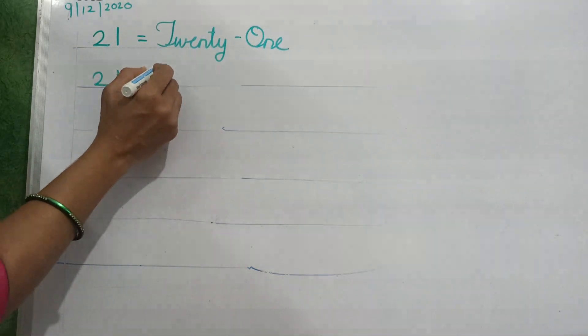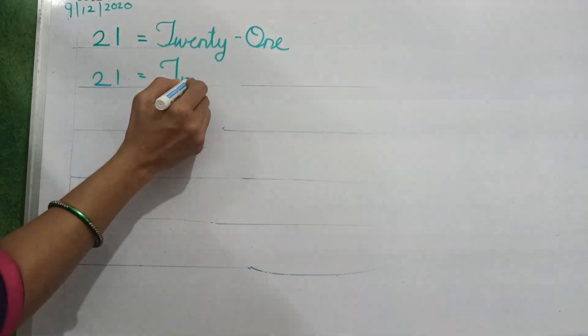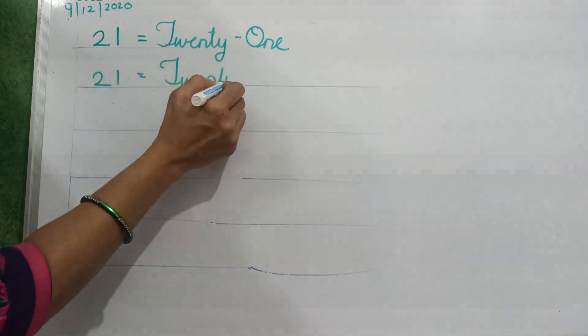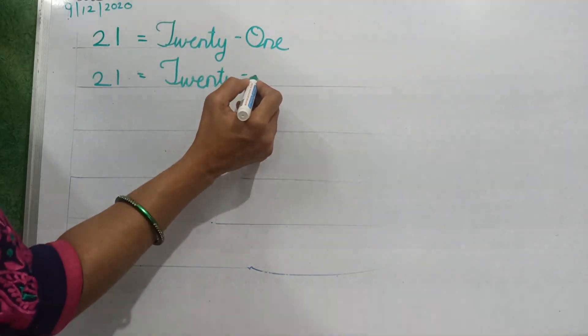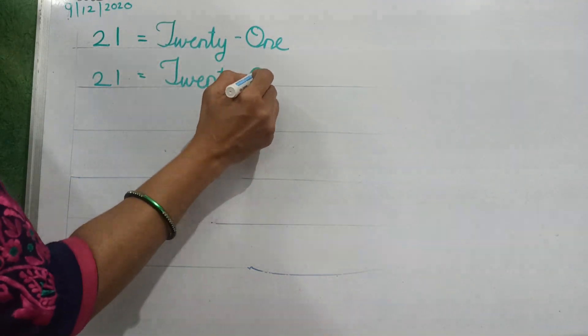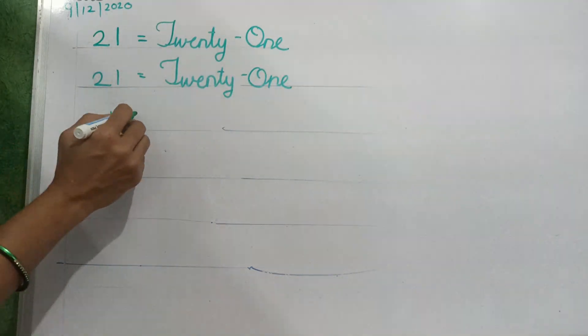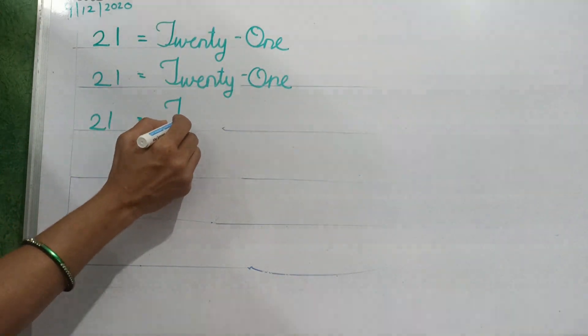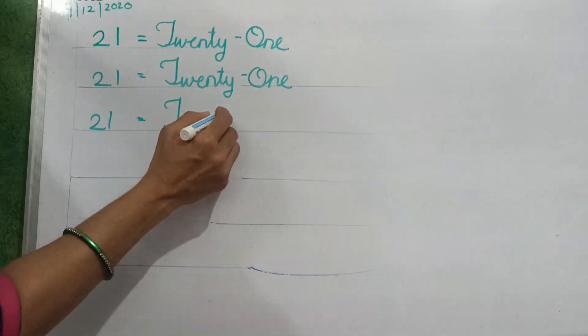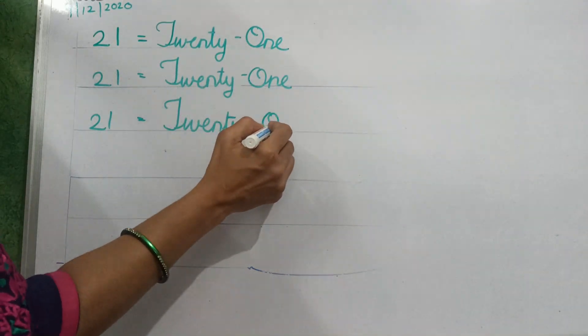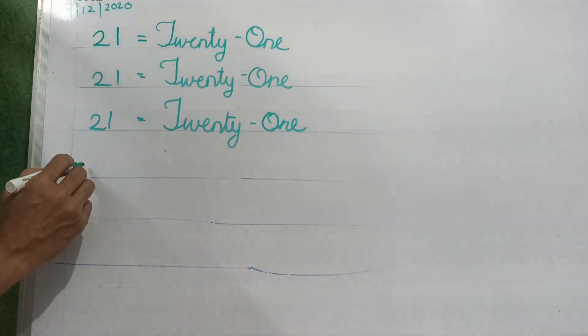See again. T, W, E, N, T, Y, 20. O, N, E, 1. 2, 1, 21. T, W, E, N, T, Y, 20. O, N, E, 1, 21.